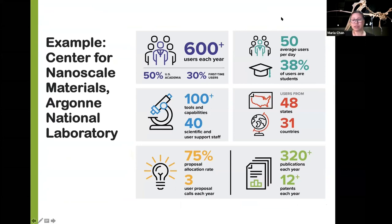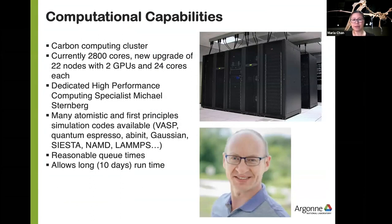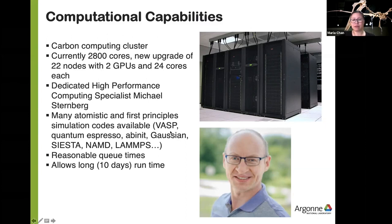The computational capability I'm talking about is called the Carbon computing cluster. Currently we have 2,800 cores, and we're getting a new upgrade of 22 nodes with 24 cores each and two GPUs. If anyone is interested in using GPUs for simulations or machine learning work, 44 parallel GPUs is quite a good collection. We have a dedicated high performance computing specialist, Michael Sternberg. He's made most major atomistic and first-principles simulation codes available on the Carbon cluster, and he's available to help with compiling code, running them, and optimizing their performance.